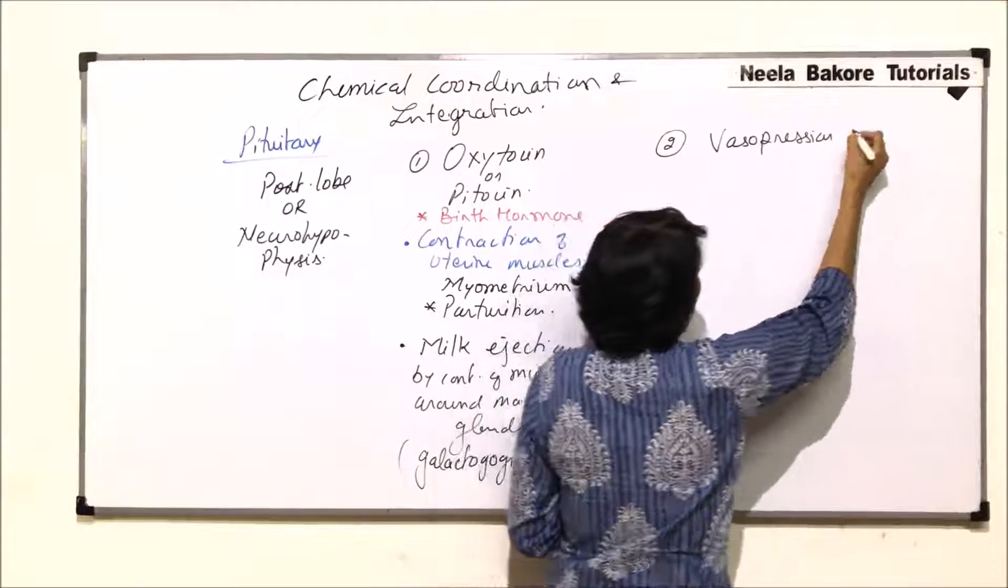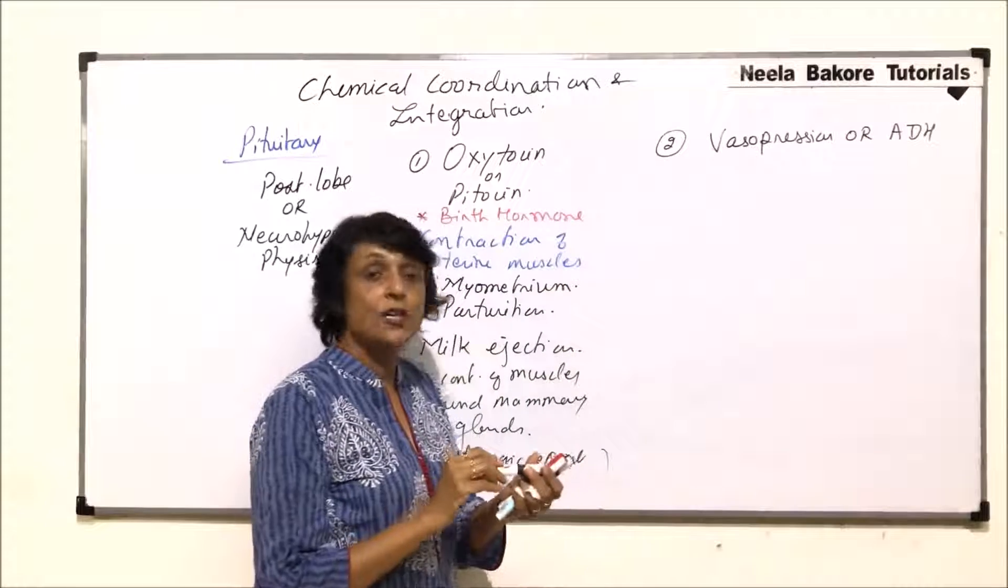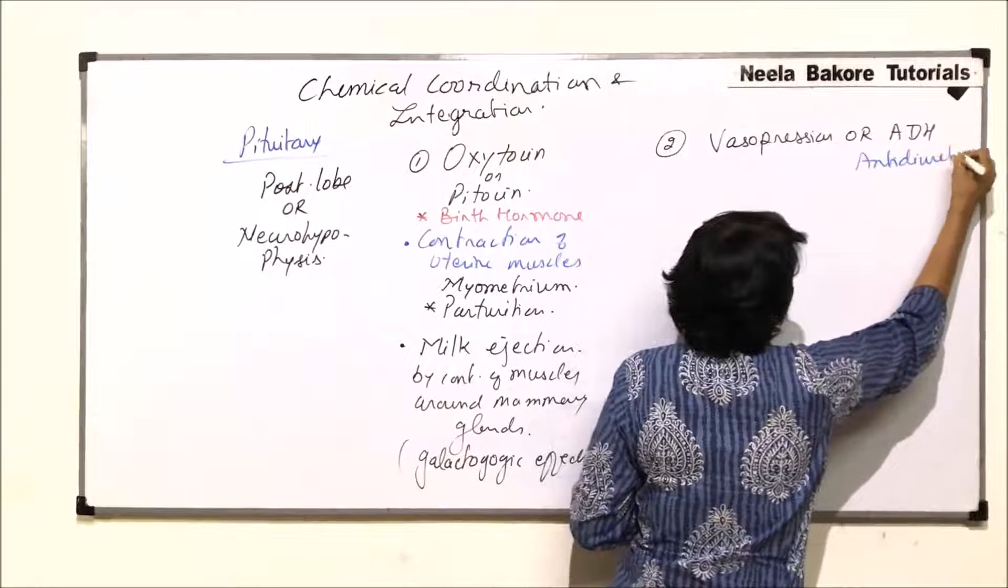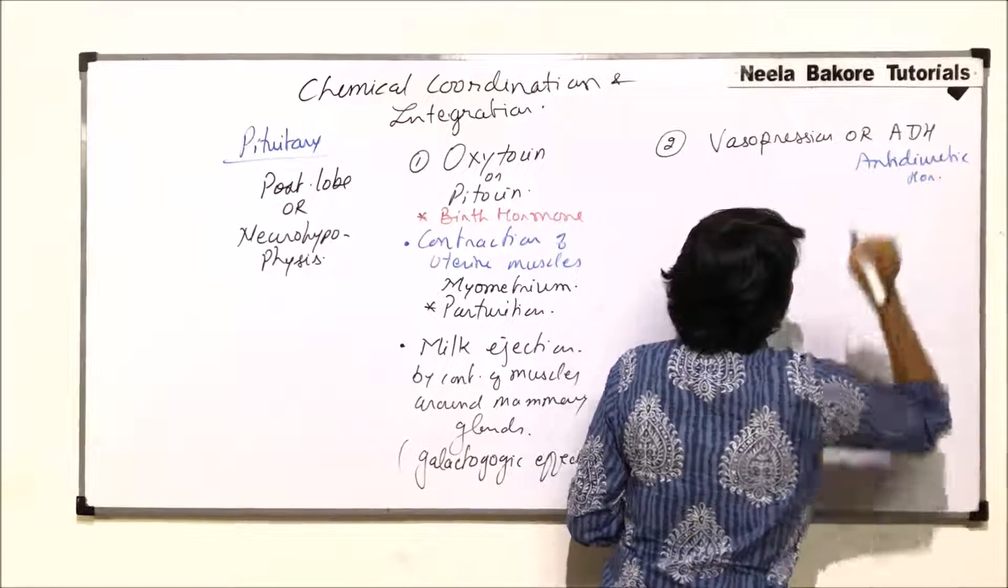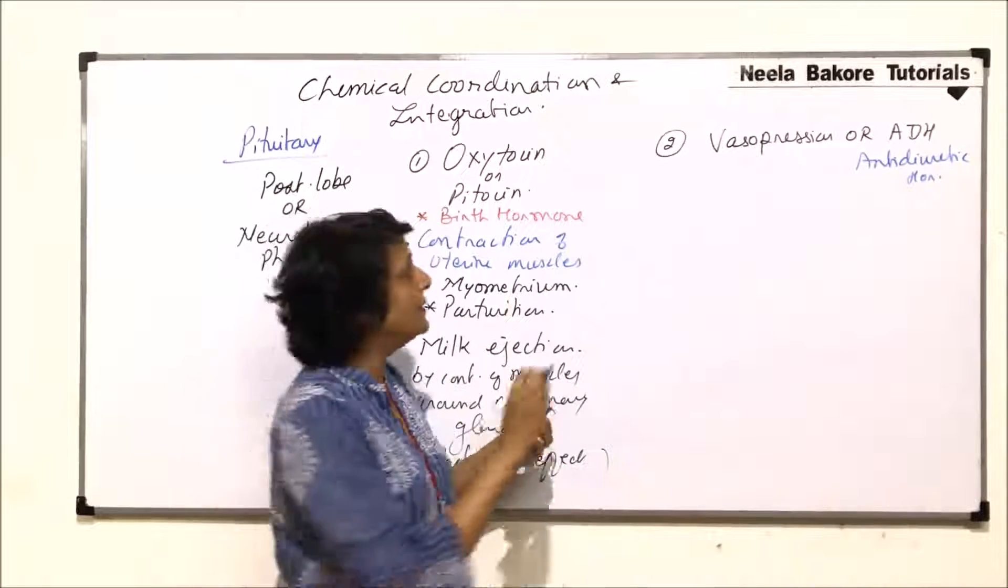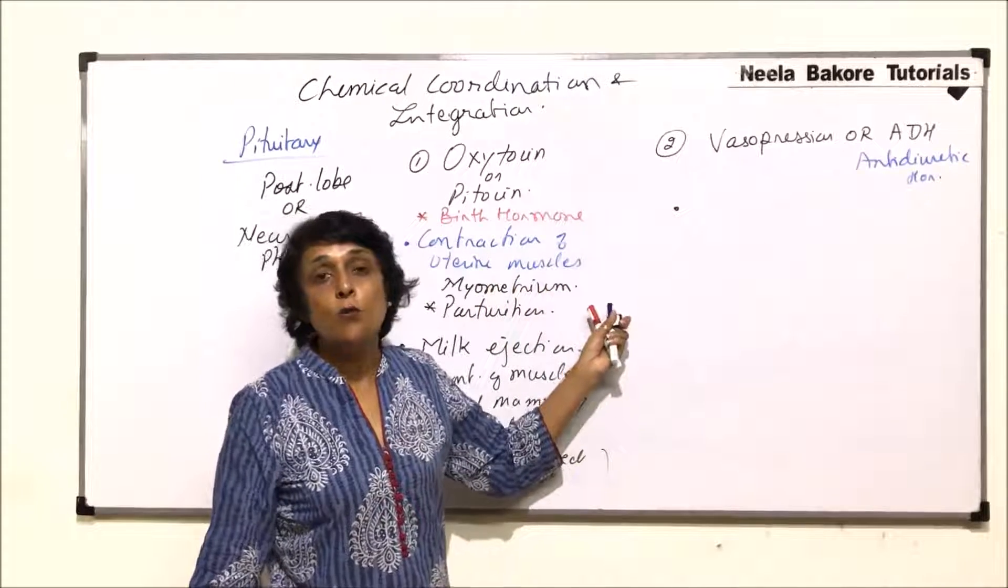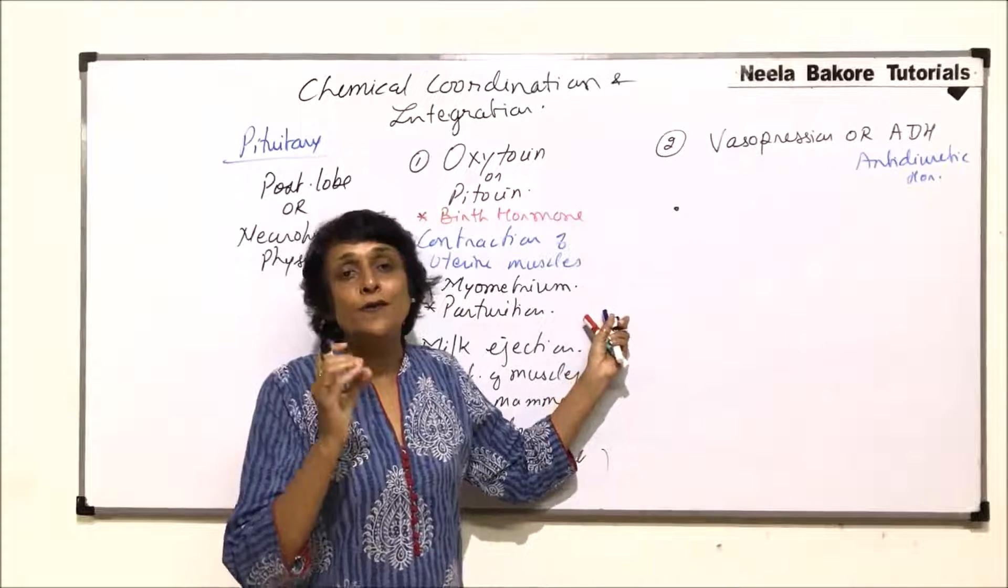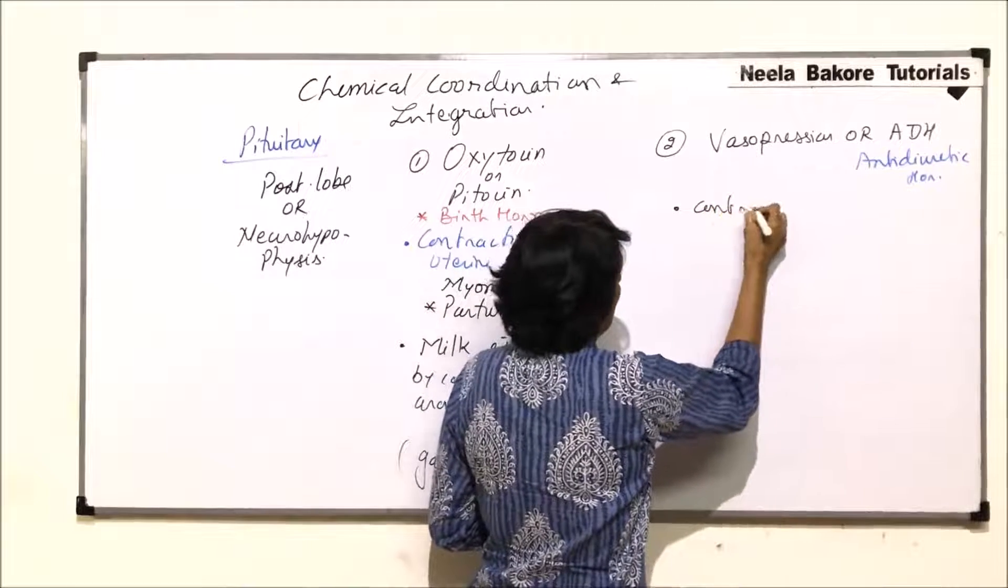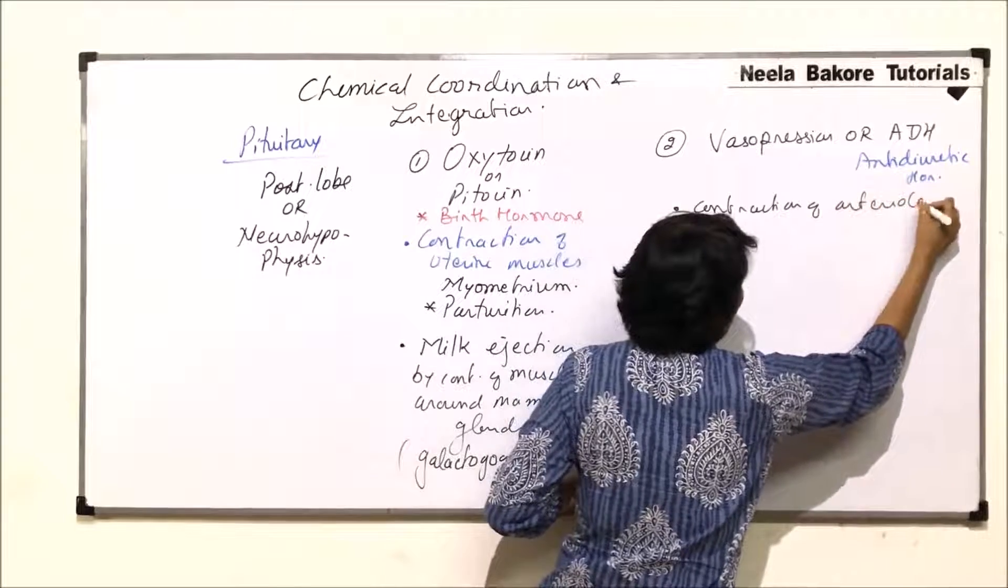Or one more name is ADH - anti-diuretic hormone. Two names are given and these names are based on the functions performed by this hormone. Vasopressin name is given because this hormone results in contraction of the blood vessels, especially the arterioles. Contraction of arterioles.